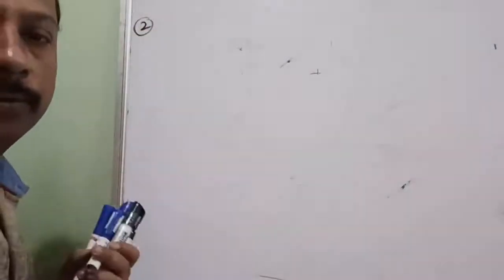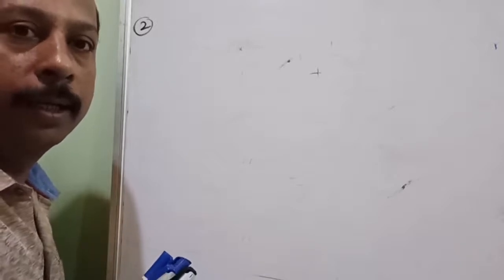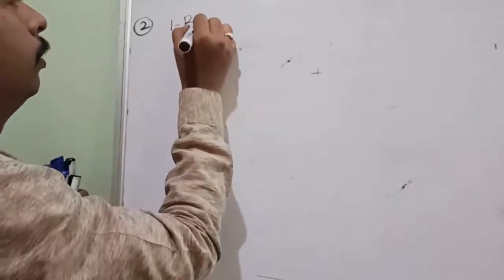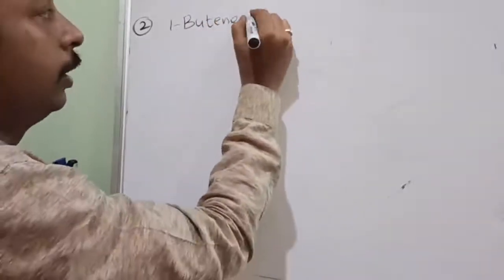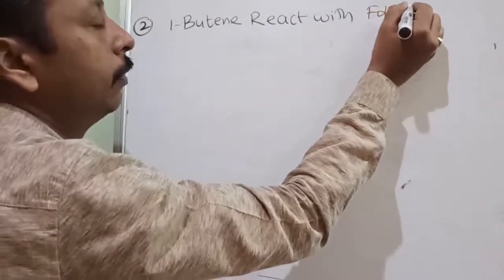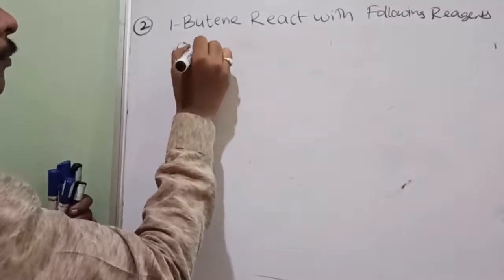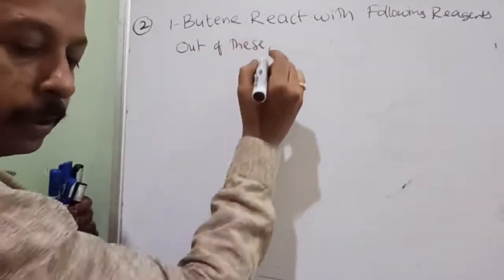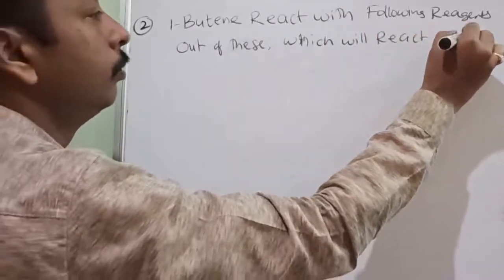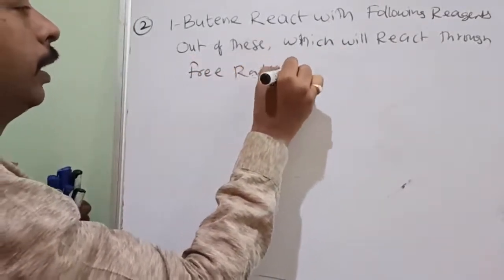I have collected wonderful questions where explanation is required for the approach. If you go through the solution you may get the answer, but how it is and why it is — lot of questions will be there in your mind. So the question is: which of the following reagents will react through free radical mechanism? Option A: HCl + peroxide. Option B: BH₃, then H₂O₂/OH⁻ (hydroboration-oxidation). Option C: HBr. Option D: HBr + peroxide. Just now I told you — normally alkenes undergo electrophilic addition. Free radical mechanism — I will tell you which and when.